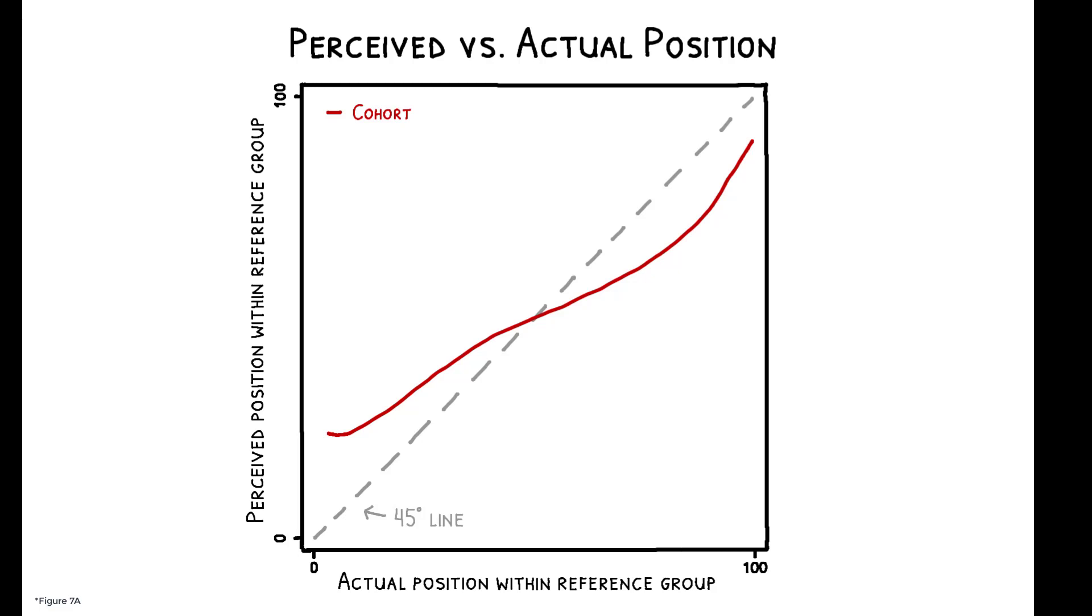Here, we see respondents' perceived position in their cohort relative to their actual position. Those who are ranked lower tend to think they are ranked higher, while those who are ranked higher tend to think they are ranked lower. This phenomenon is not specific to the cohort income distribution. Across all reference groups, there is a clear pattern of center bias.